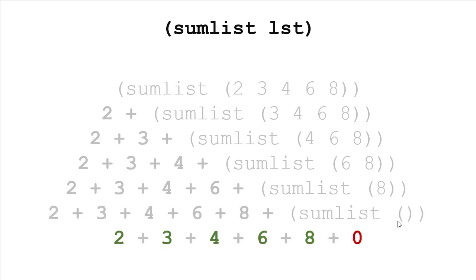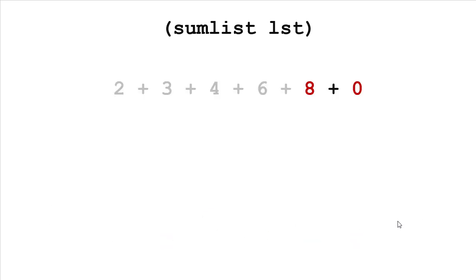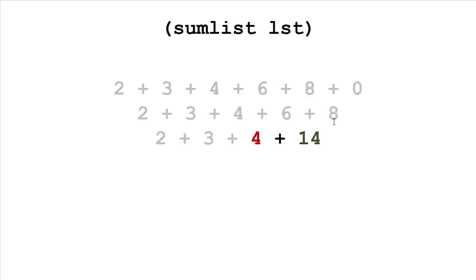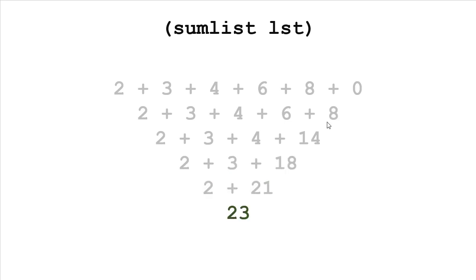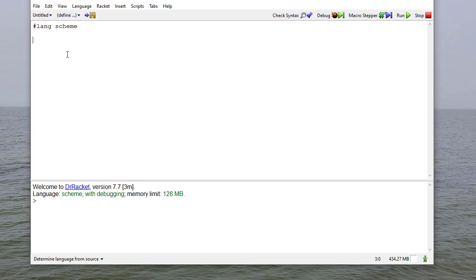So now we undo the recursion and we're going to be adding those values together. Eight plus zero is eight, six plus eight is 14, four plus 14 is 18, three plus 18 is 21, and two plus 21 is 23. So let's take a look at what that looks like in code.